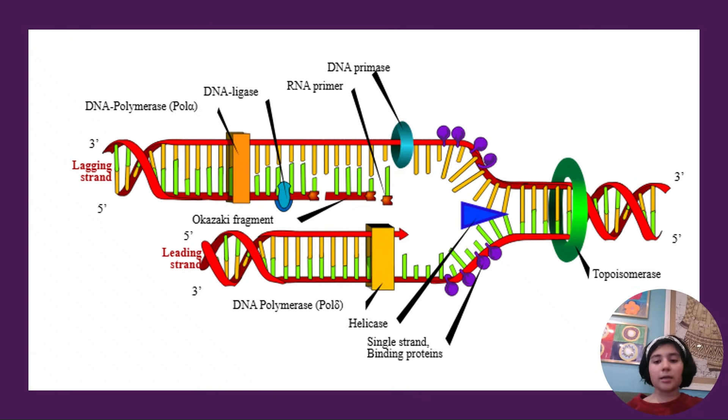So one strand will go to each new DNA, and one strand of each of those two new DNAs will be new, made by the DNA primase using the RNA primer.